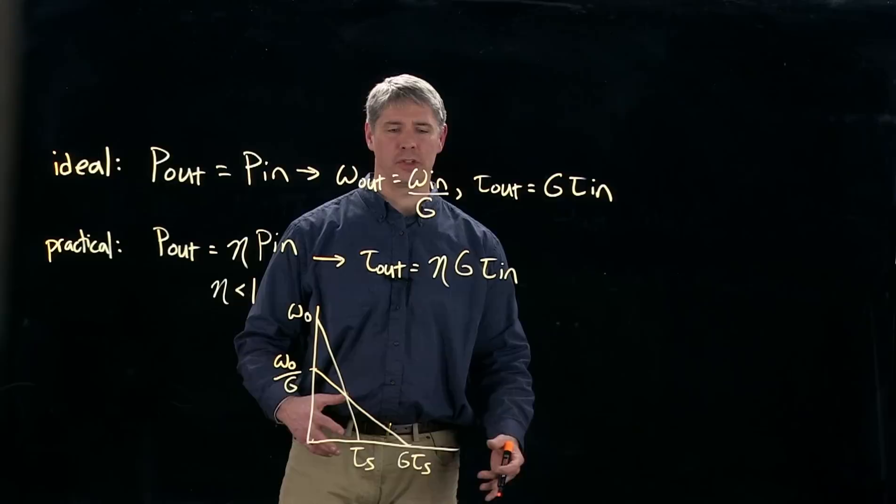But due to this efficiency factor, the actual output would look something like this, where this is eta times g times the stall torque of the motor.